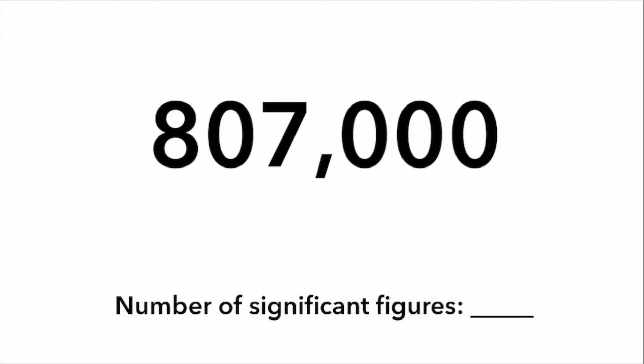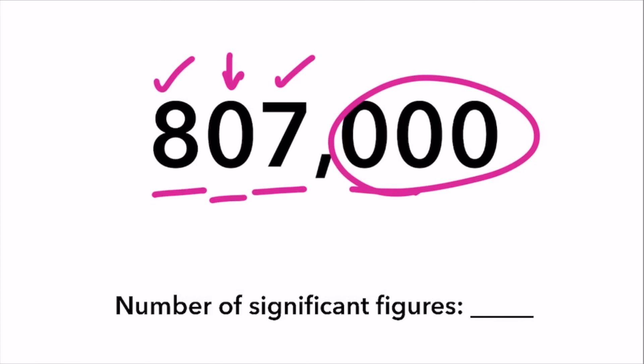Example five: 807,000. The eight and the seven are non-zero numbers. The zero between them is significant because it's between non-zero numbers. However, the three zeros at the end are not significant because there is no decimal point. So our final answer is three significant figures.